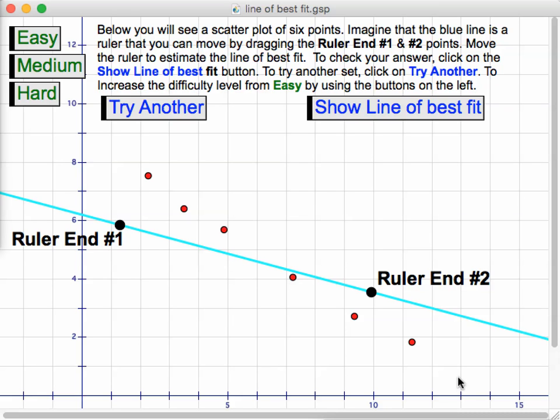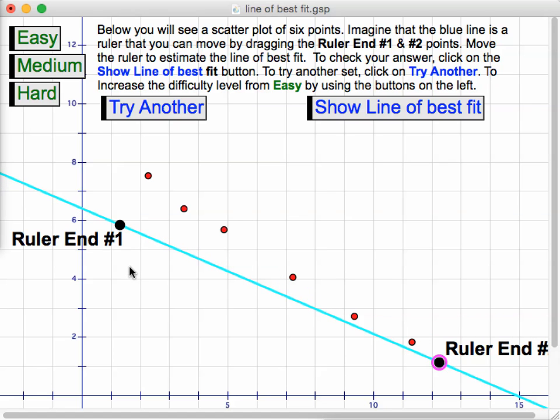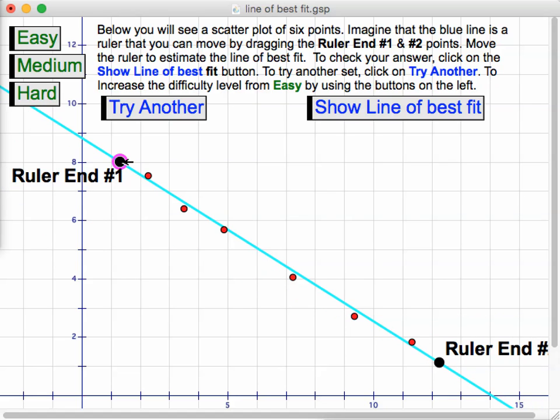This is a relatively simple sketch where students are given six randomly generated points that are roughly linear, and they're asked to use this ruler to guess a line of best fit, what they think the line of best fit is.